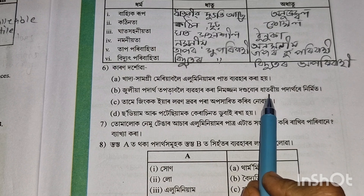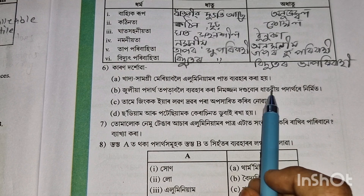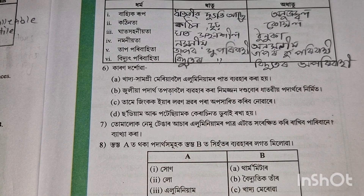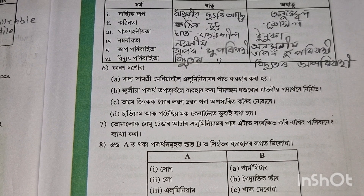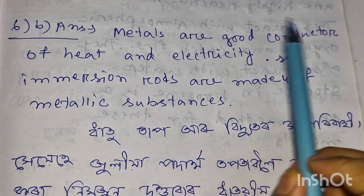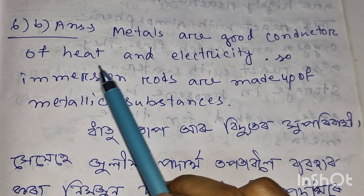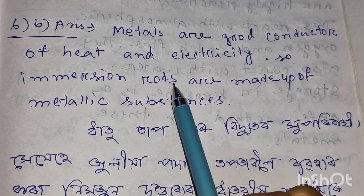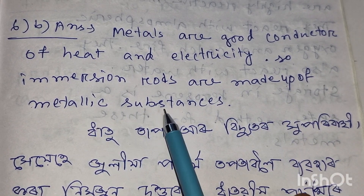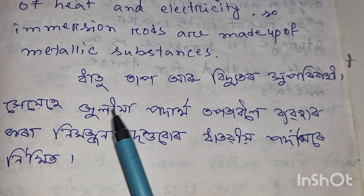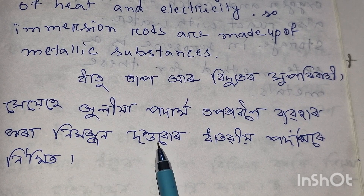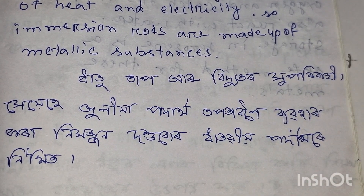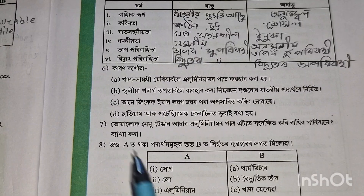We use metal to make cooking vessels because metals are good conductors of heat and electricity. Immersion rods are also made of metallic substances for the same reason.